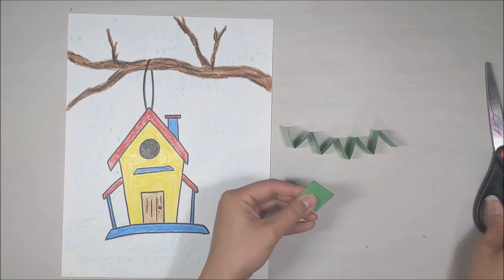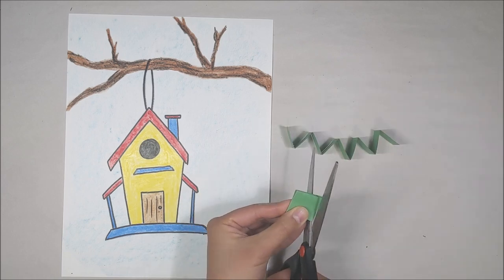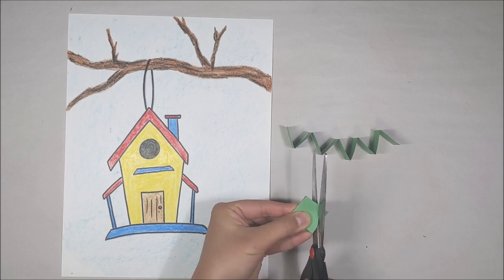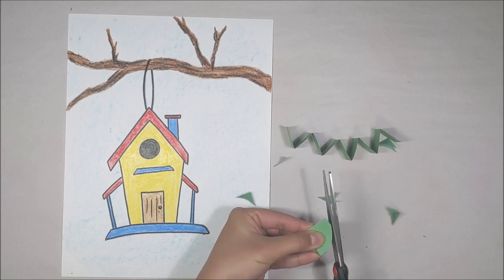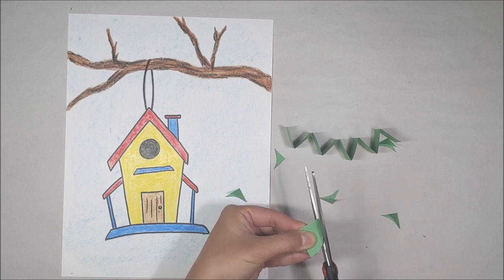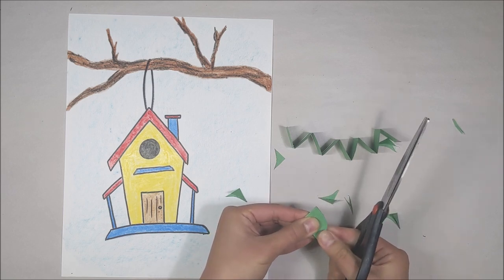Taking one of those strips, hold it down. Cut a curved cut from one corner to the opposite corner. We're creating that curved cut to create the leaf shape.